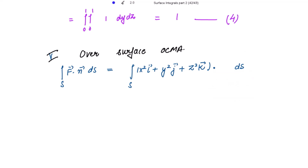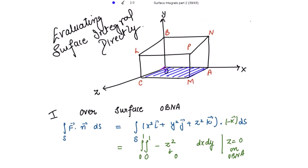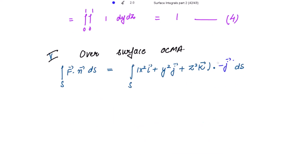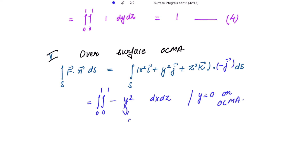Over surface OCMA, the outward unit normal is along the negative y-axis, so n̂ = −ĵ, and ds = dx dz. On this surface y = 0, so the dot product gives −y² = 0. The surface integral equals 0. Marking this as 5.